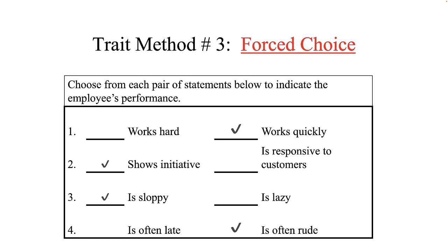The forced choice method is a trait approach to performance appraisal that requires the rater to choose from statements designed to distinguish between successful and unsuccessful performance. However, each statement in each pair is equally favorable or equally unfavorable, making some choices tough. It has fallen a bit out of favor lately. In this example, the rater must choose whether the incumbent is sloppy or lazy, or if they show initiative or are responsive to customers. Picking between sloppy and lazy or between late and rude is odd if neither trait is present, and to be effective, the list of paired words must be very, very long.